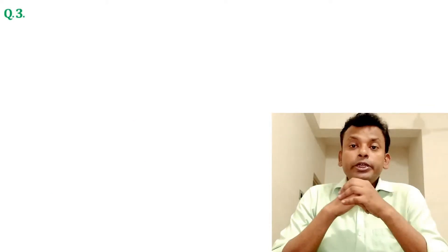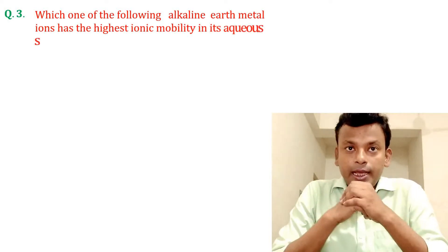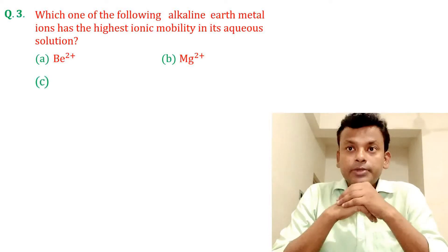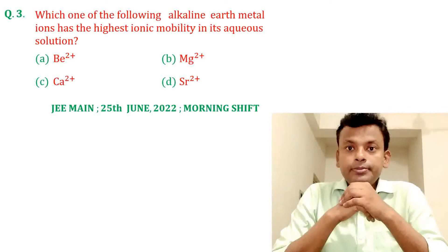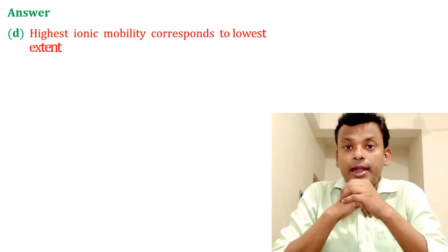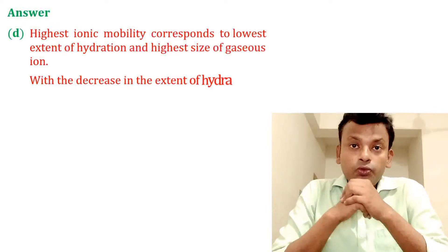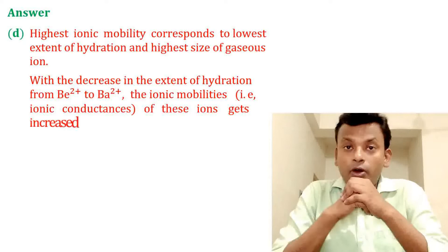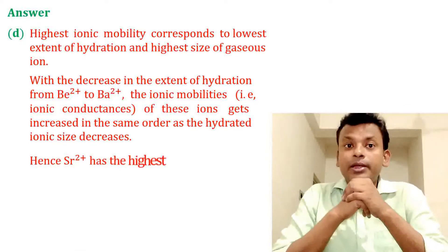Question 3: Which one of the following alkaline earth metal ions has the highest ionic mobility in its aqueous solution? This question was set in JEMN 25th June 2022 Morning Shift. Answer: Option D is the correct answer. Highest ionic mobility corresponds to the lowest extent of hydration and highest size of the gaseous ion. With decrease in the extent of hydration, the ionic mobilities — that is, the ionic conductance — increase as the hydrated ionic size decreases. Hence Ba2+ has the highest ionic mobility in its aqueous solution.